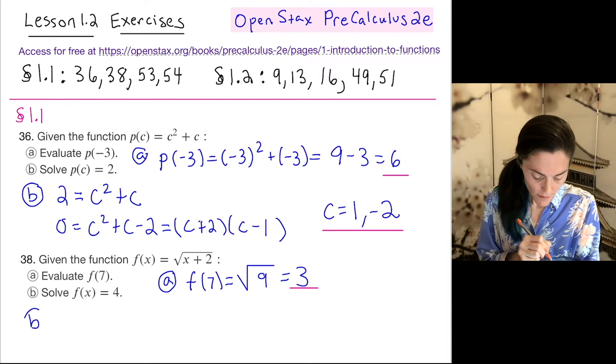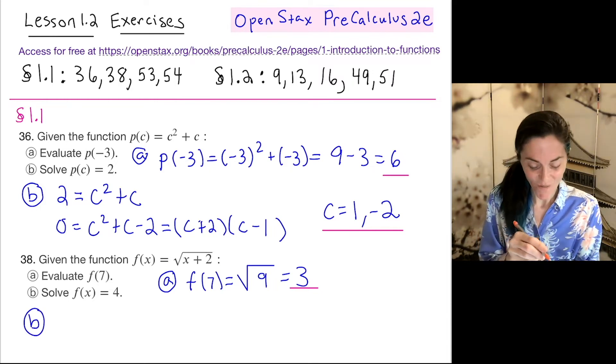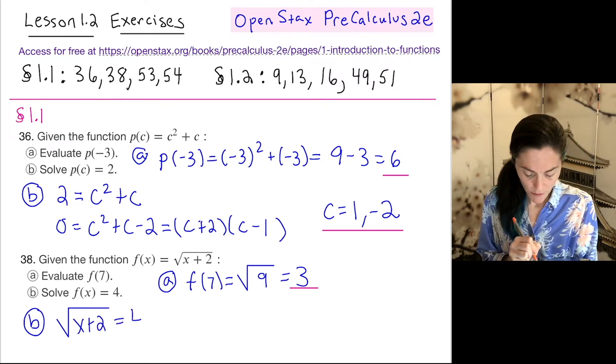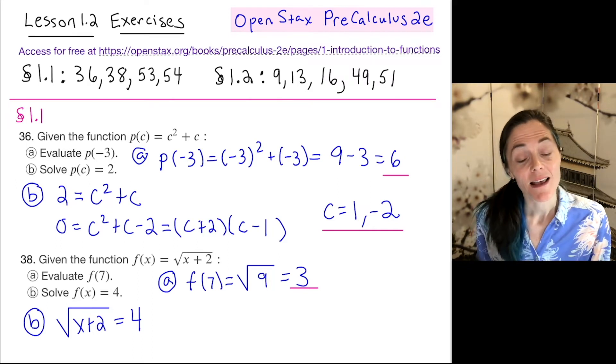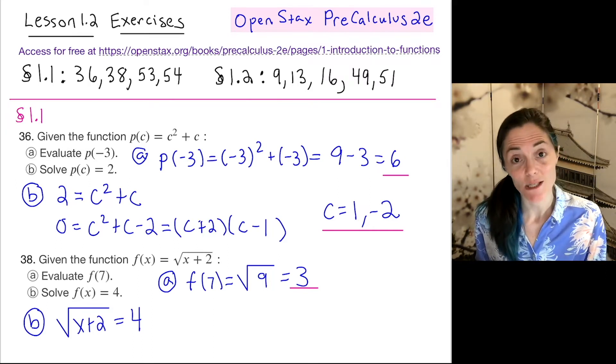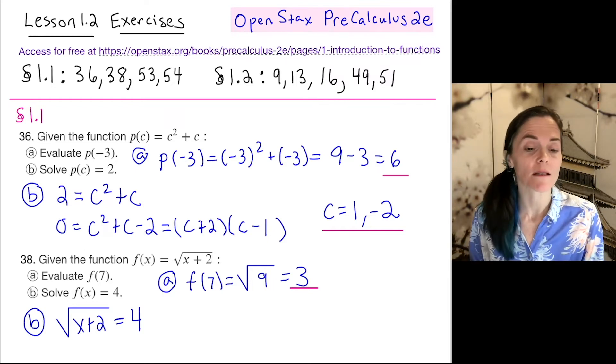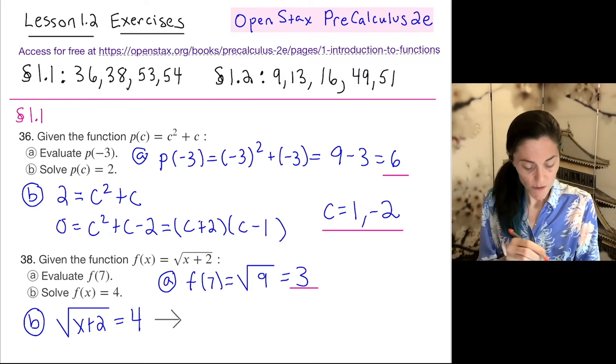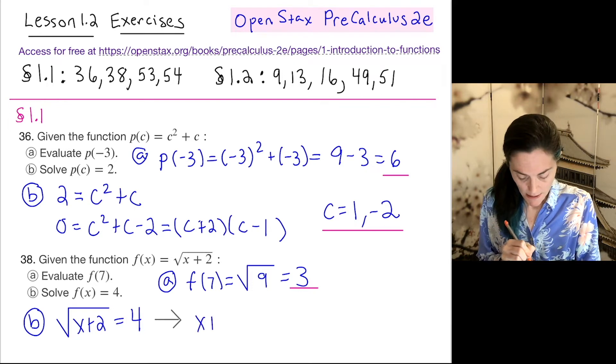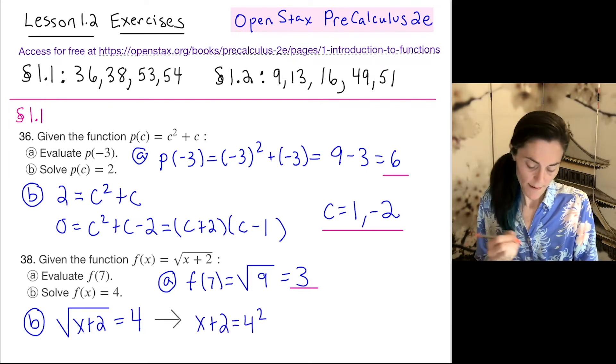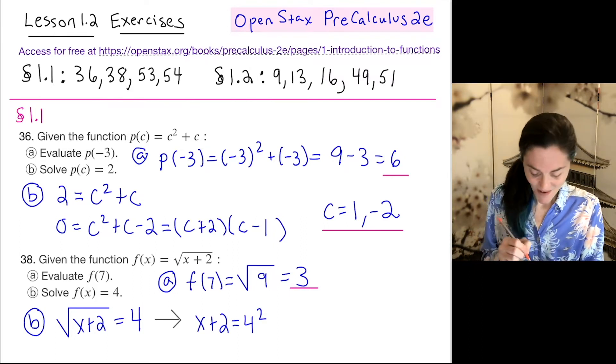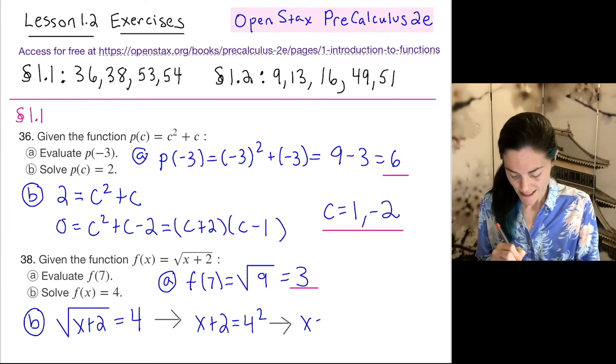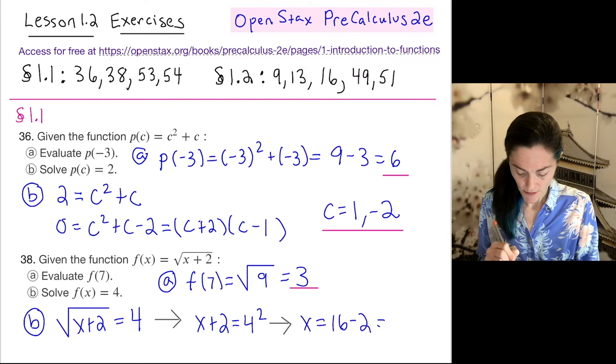Now letter b, we want to solve f(x) equals 4. So we just set, similar as we did before, we set my function equal to 4 and try to solve for x. This is a little different. This is not a quadratic, it's a square root function. So how would we solve here? Well, you know that I could just square both sides. So if the square root of x plus 2 is 4, this would say that x plus 2 is 4 squared, which is 16. Now I'm almost there. I can just subtract 2 from each side. So x is 16 minus 2, which is 14.